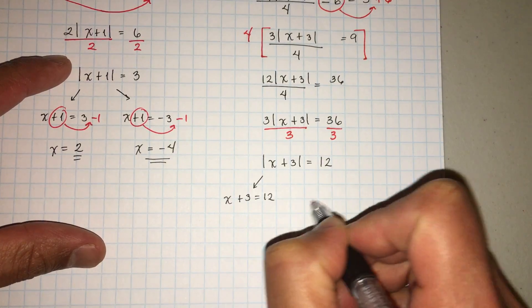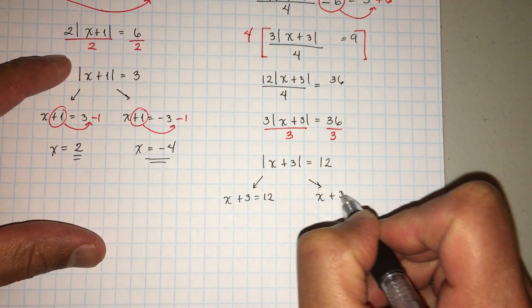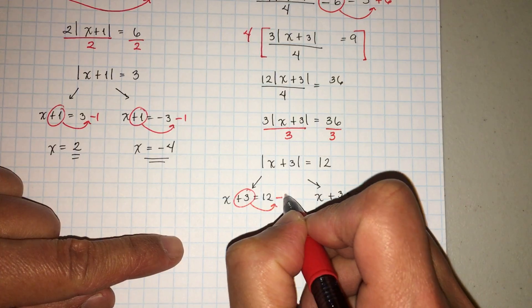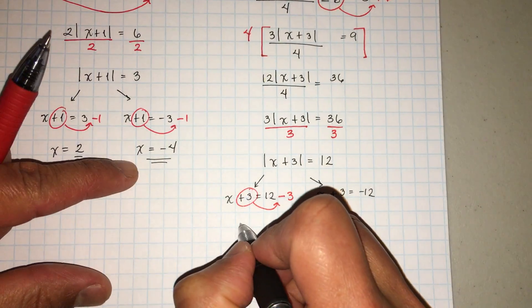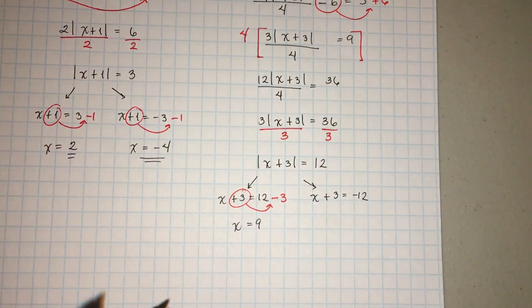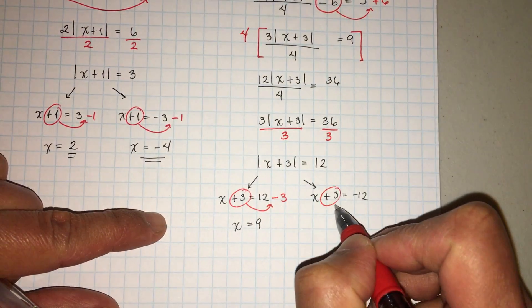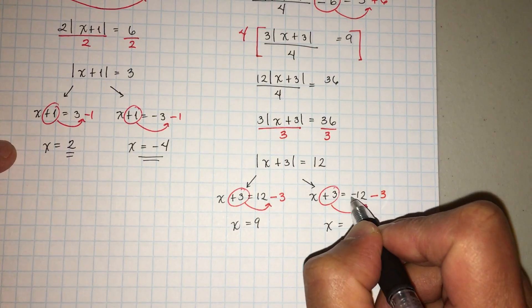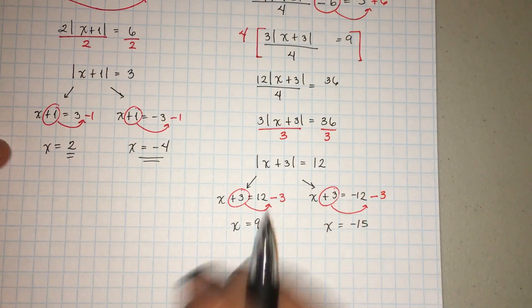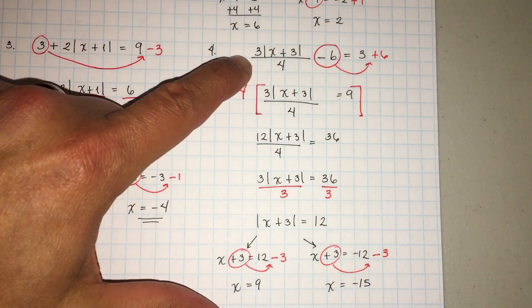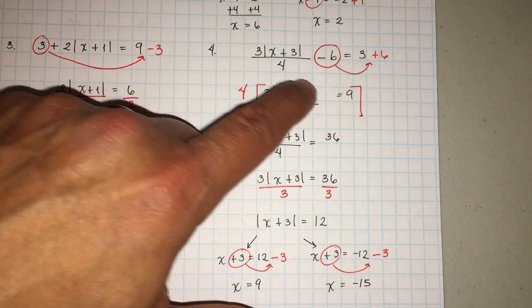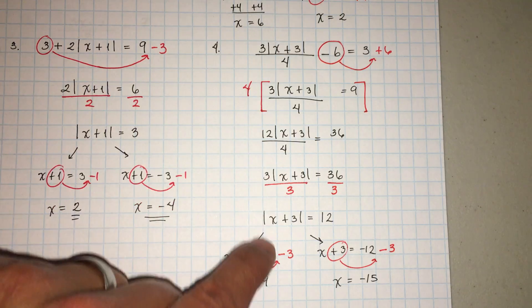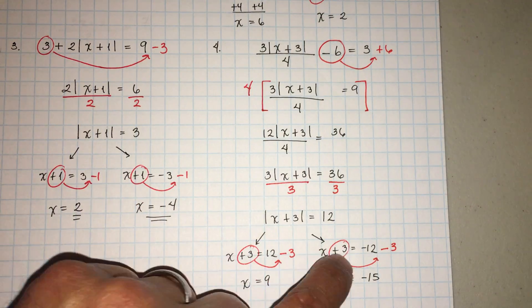Now that I've isolated the absolute value, I can go ahead and solve it. X plus three is equal to positive twelve, and the other solution: x plus three is equal to negative twelve. Solving: positive three becomes a negative three on the other side. Twelve minus three gives you nine — doce menos tres es nueve. And for the other: negative twelve minus three is negative fifteen. So x equals nine and x equals negative fifteen.